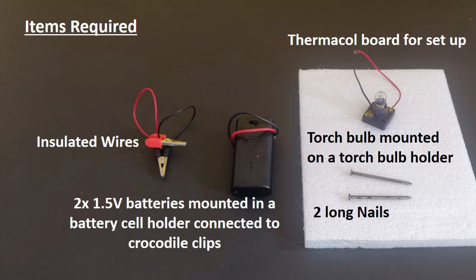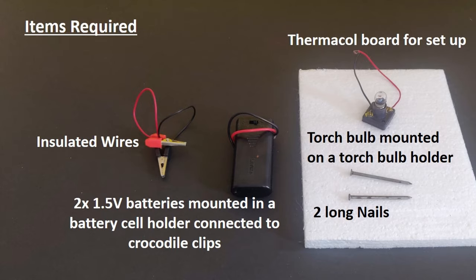For this we will need insulated wires, two 1.5 volt batteries mounted in a battery cell holder and connected to crocodile clips, a torch bulb and a torch bulb holder, 2 inch long iron nails, and a thermocol board for arranging the setup. You can also use a foam sheet instead.